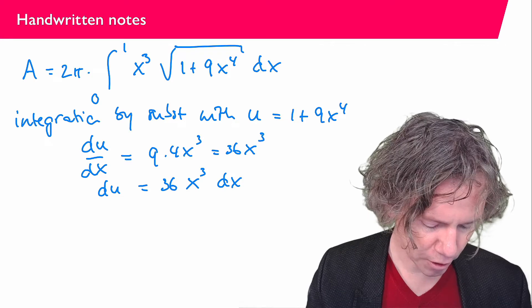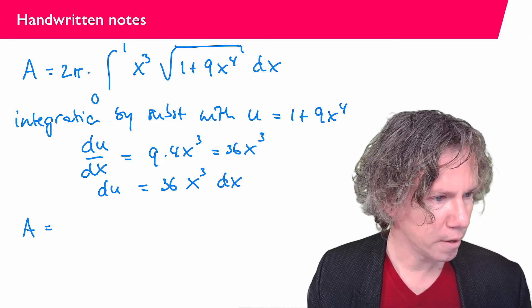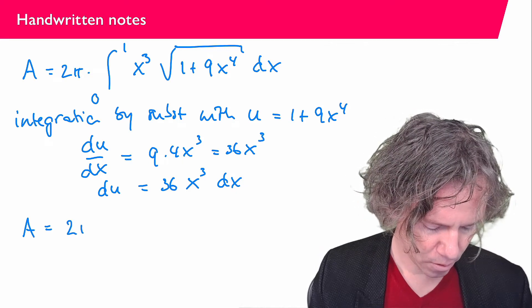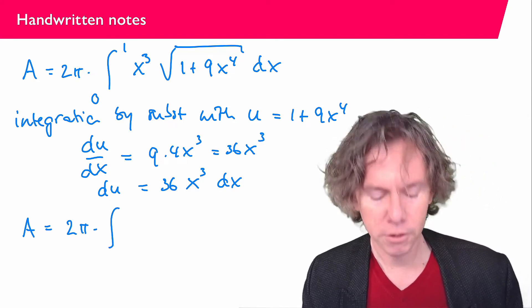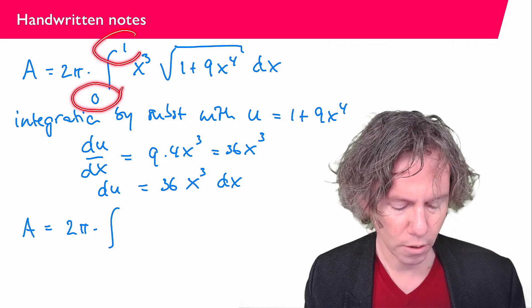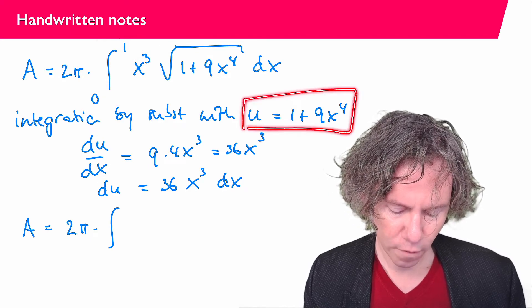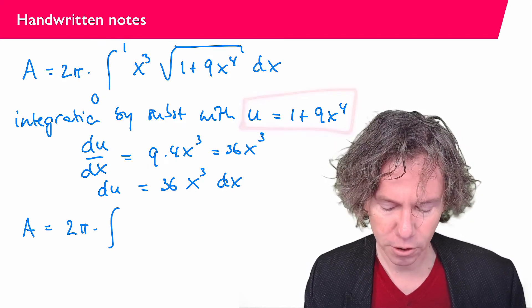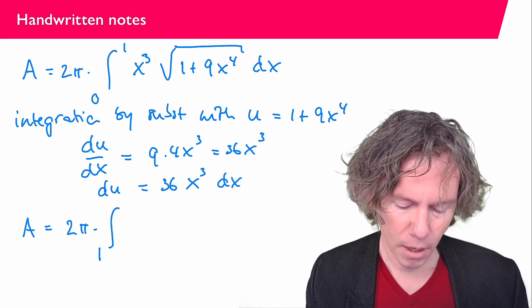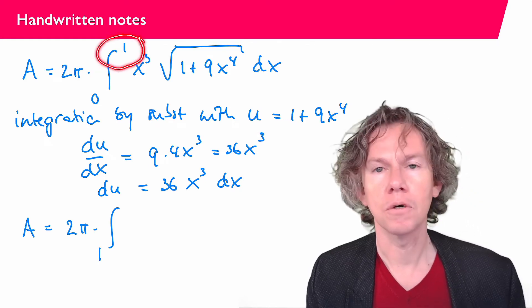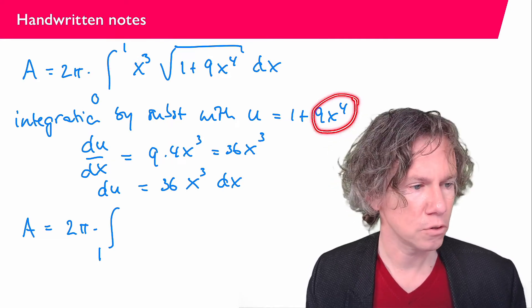So what we have now is that A equals 2π times the integral. And now I have to pay attention because the integral goes from 0 to 1, but that is in terms of x. Now x equals 0 corresponds with u being equal to 1. Just plug in x equals 0, this term disappears and we have u equals 1. And then if x equals 1, so the upper limit of the integral, I plug in 1 here for x, and you see that I have to integrate to 10.